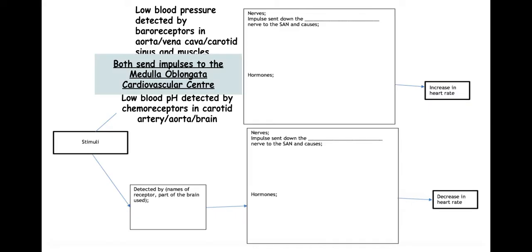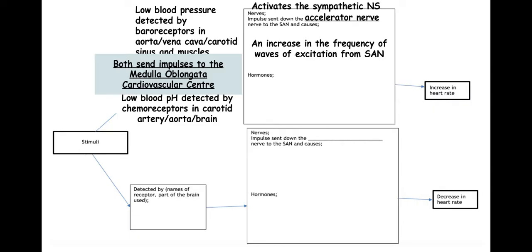Both of these receptors will send an impulse to the medulla oblongata, which contains the cardiovascular centre. The cardiovascular centre will activate the sympathetic nervous system, and this will cause impulses to be sent along the acceleratory nerve to the SAN. This will increase the frequency of waves of excitation from the SAN and therefore increase the heart rate.